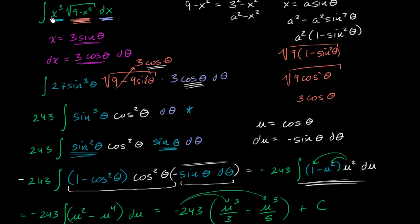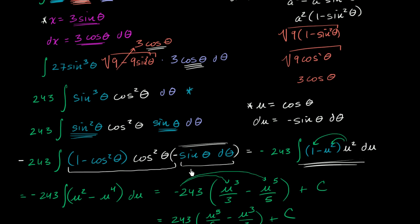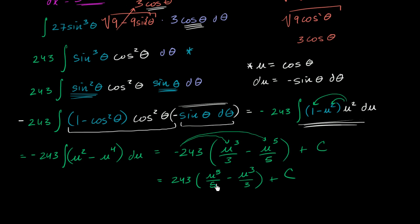In the last video, in order to evaluate this indefinite integral, we first made the substitution that x is equal to 3 sine theta. This got us to an integral of a certain form. Then we broke up sines and cosines using trig identities to get it into a form where we could do u-substitution. We set u equal to cosine of theta, and we were able to take the antiderivative, getting a final answer in terms of u.